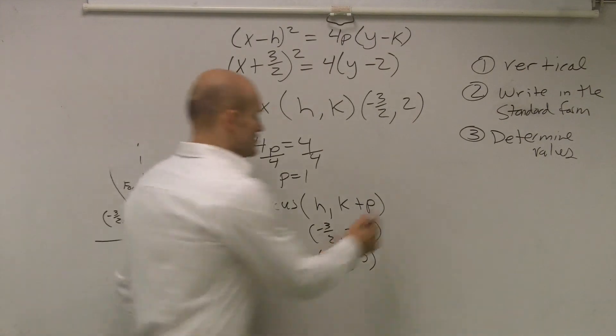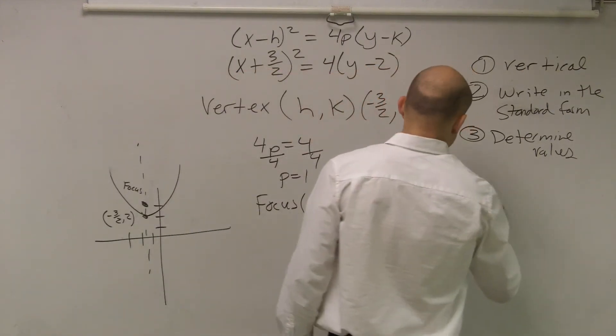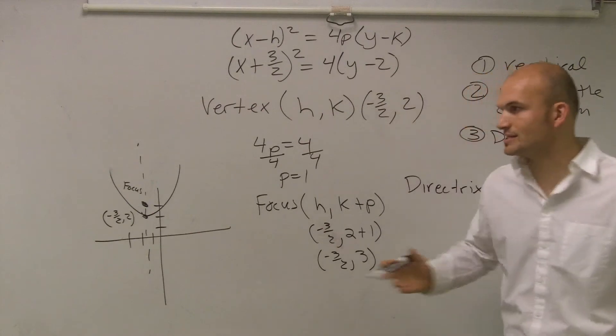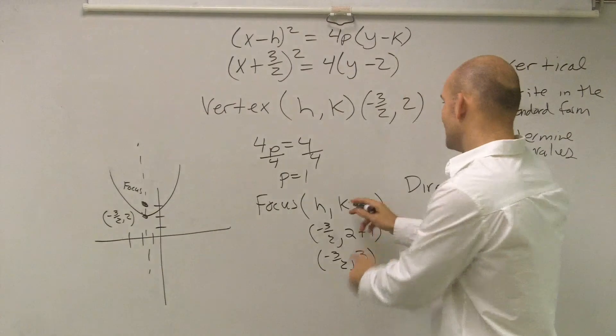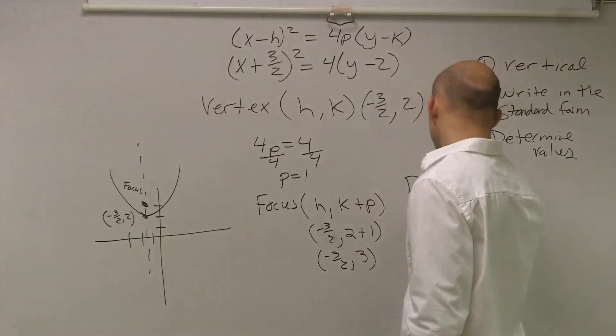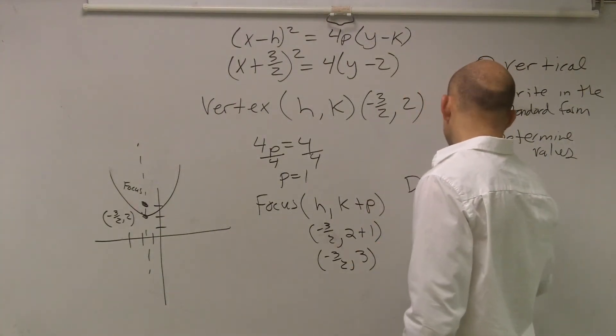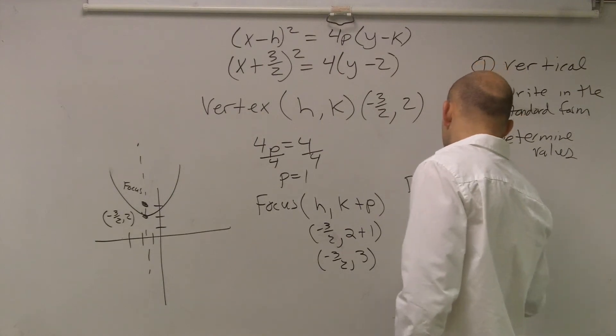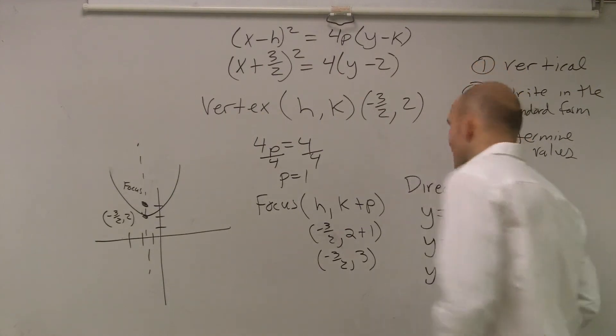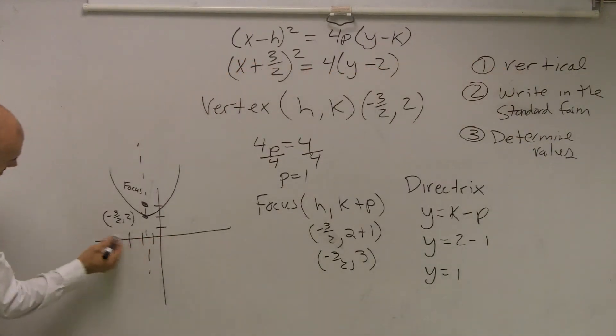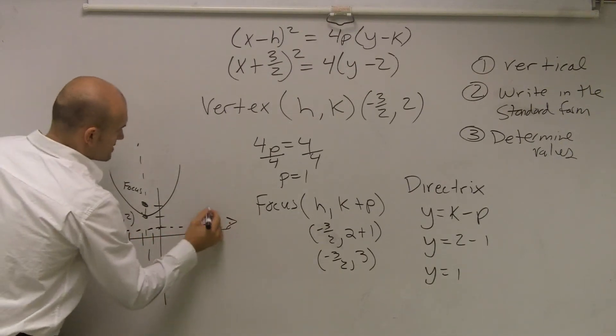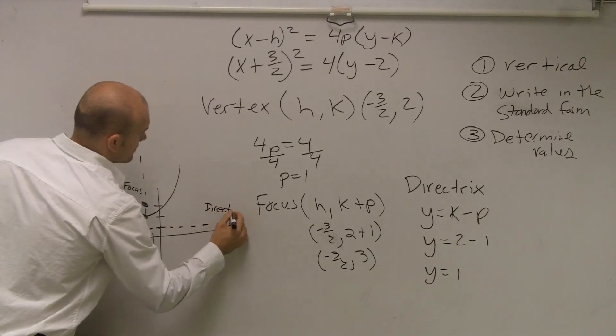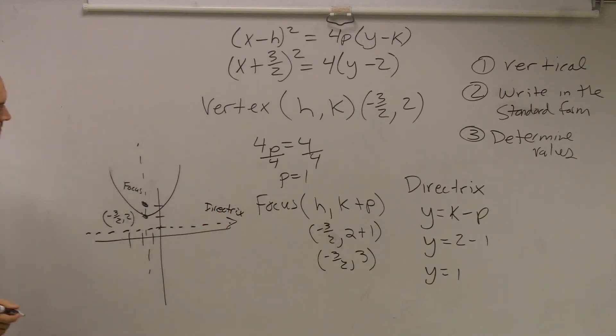And then directrix is very much the same thing. But remember, the directrix is now your p distance in the opposite direction. So for a vertical parabola, the directrix is going to be horizontal, so it's going to be y equals k minus p. So y equals 2 minus 1, y equals 1. And therefore, now I'll go to my graph and I'll go to 1 and draw a line, and say that's my directrix.